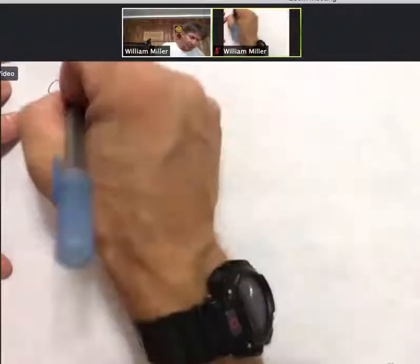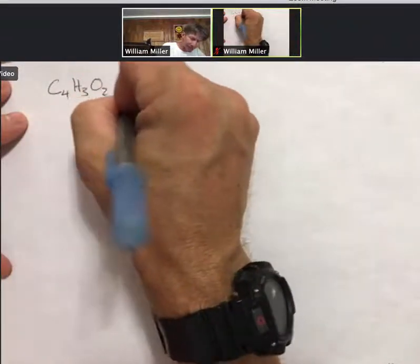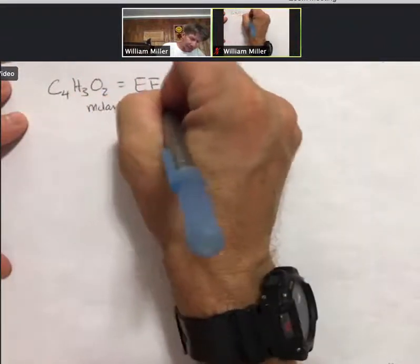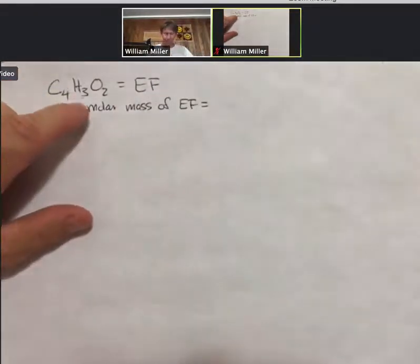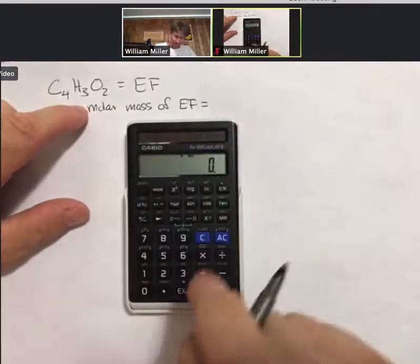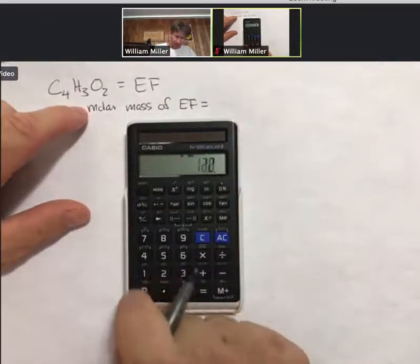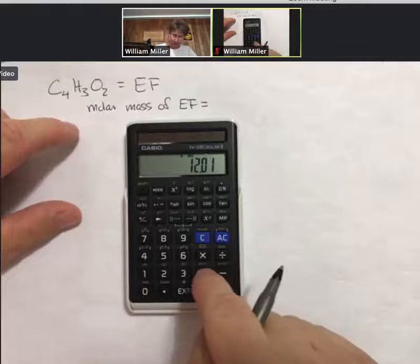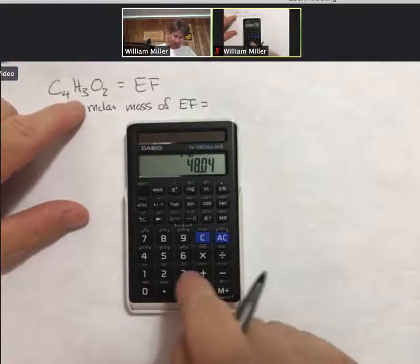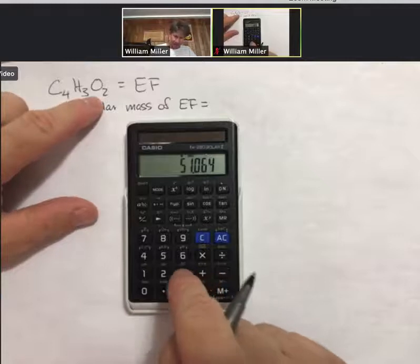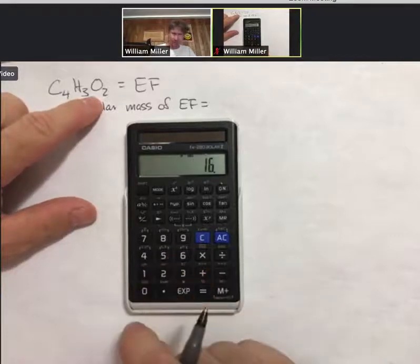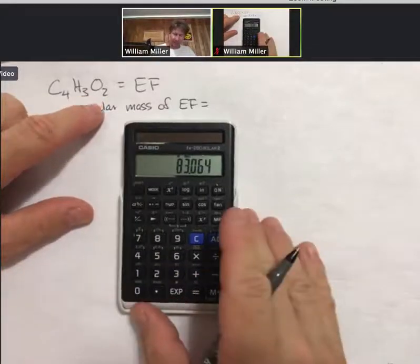The molar mass of my empirical formula is going to be 4 times carbon, 12.01, plus 3 times hydrogen plus 2 times oxygen, 83.1.